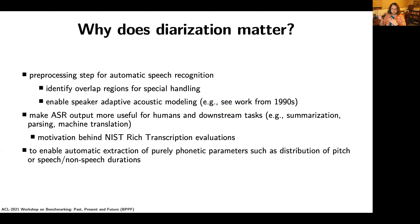Why do we care about diarization? We could care about it as a pre-processing step for automatic speech recognition. Diarization allows you to identify overlap regions as a byproduct, and overlap speech is particularly problematic for speech-to-text. Being able to identify those regions and handle the overlap specially would be useful. It has also been used to enable speaker adaptive acoustic modeling — for instance, in early work on speaker diarization from the 1990s, particularly for broadcast news.